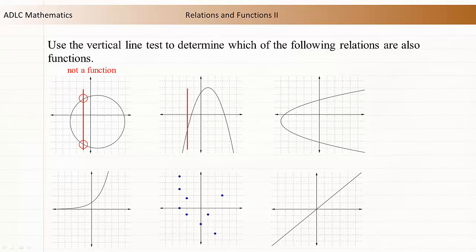In the second relation, any vertical line will only intersect the relation once. This relation is a function.